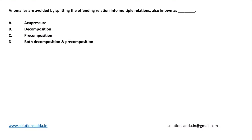This is a question from database management systems. Anomalies are avoided by splitting the offending relation into multiple relations — also known as: options are decomposition, pre-composition, or both decomposition and pre-composition. The correct answer for this question is option B: decomposition.